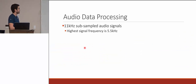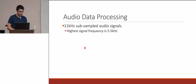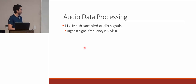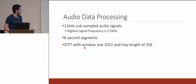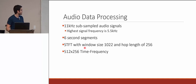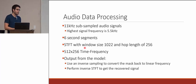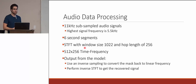Before the network processed the audio, some preprocessing was done. They used 11 kHz subsampled audio signals with the highest signal frequency at 5.5 kHz — this adequately reduced the size while preserving important frequencies. Audio was segmented into six-second segments. The STFT used a window size of 1022 and hop length of 256, producing a time-frequency spectrogram of size 512 by 256. The model output a mask applied over the original spectrogram, then an inverse STFT converted it back to playable audio.